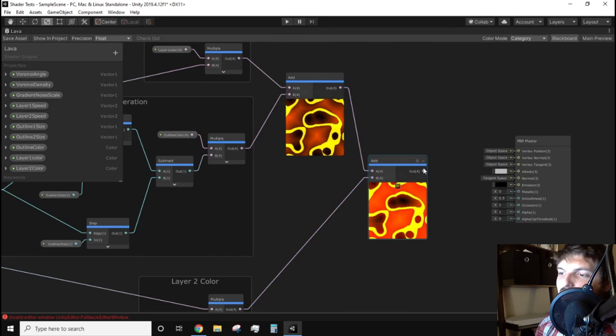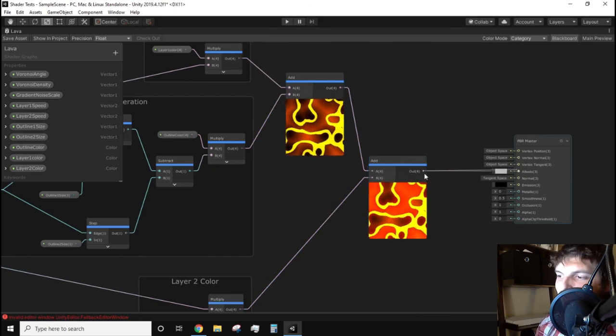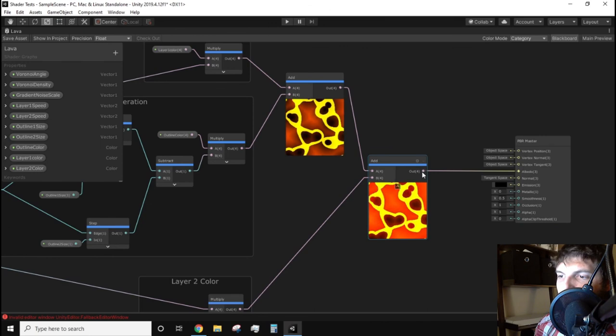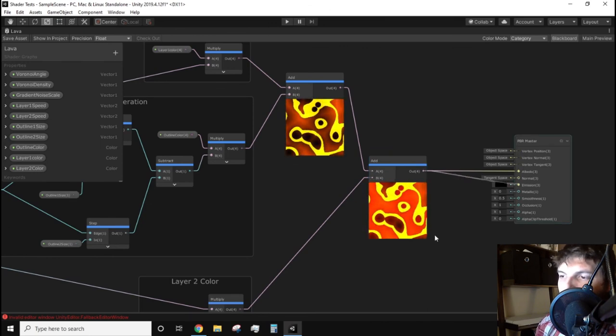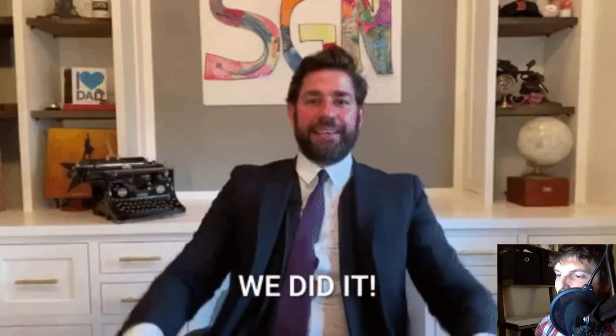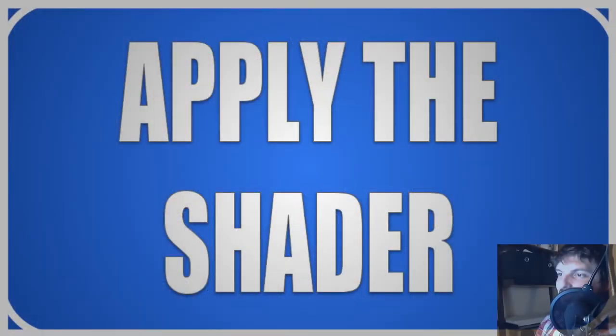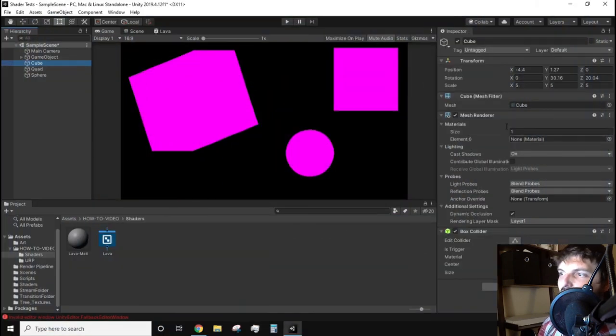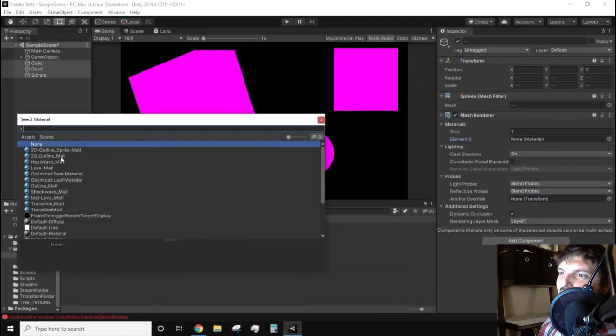The final step of the graph is to take the output of this add node and connect it to the albedo and the emission of the PBR master. Save the asset in the top left hand corner and the shader should be done. I have a scene set up with a cube, a quad, and a sphere. Let us apply our lava material to these objects and see how it works.